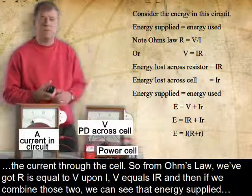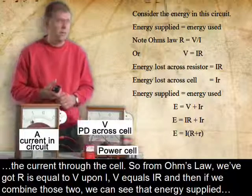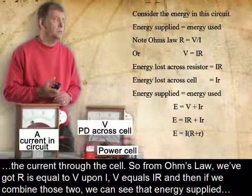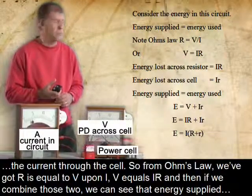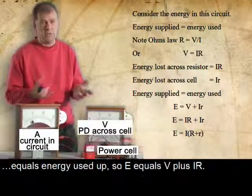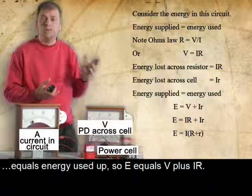So from Ohm's law, we've got R equals V upon I, V equals IR, and then if we combine those two, we can say the energy supplied equals energy used up. So E equals V plus IR.